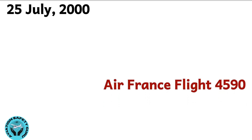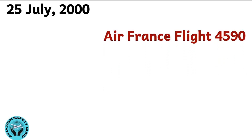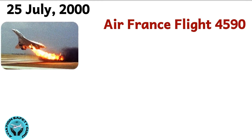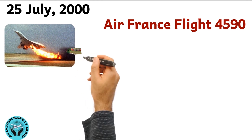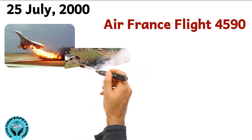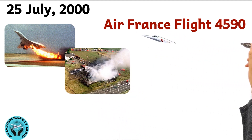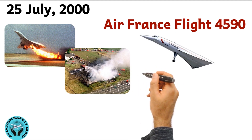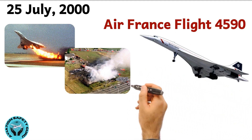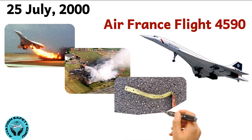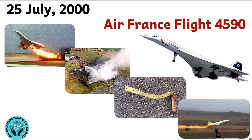On the 25th of July 2000, Air France Flight 4590, a Concorde aircraft, crashed shortly after takeoff, killing all 109 people on board and four on the ground. It was the only fatal Concorde accident during its 27-year operational history. During takeoff, the aircraft ran over FOD on the runway, causing a tire to explode and disintegrate, resulting in fuel line rupture and fire.